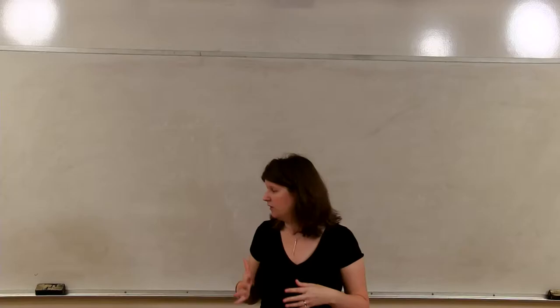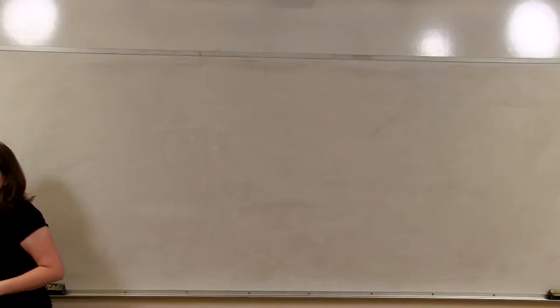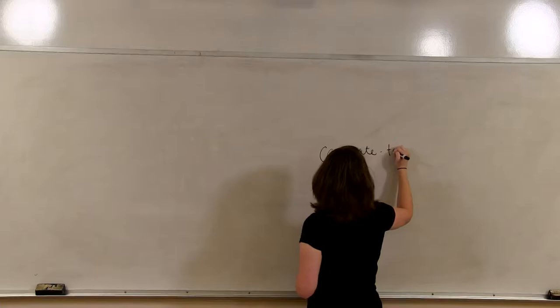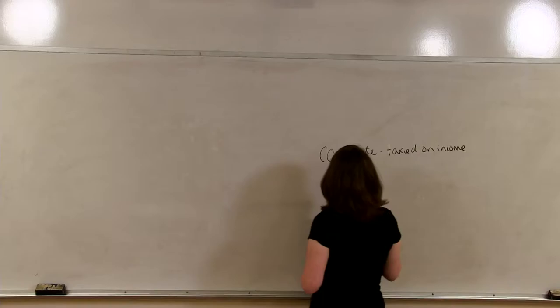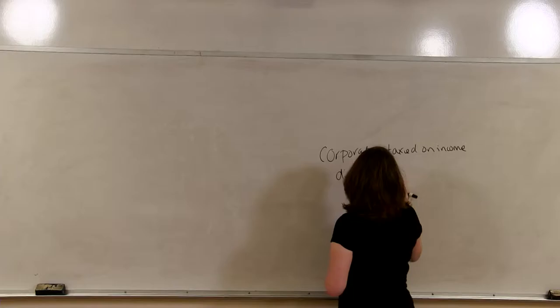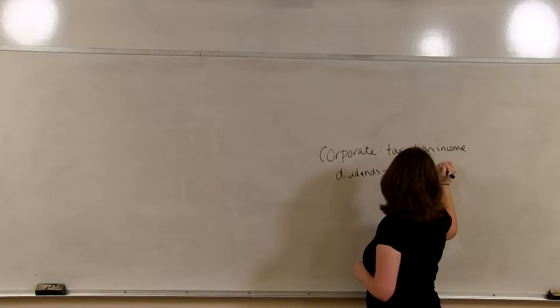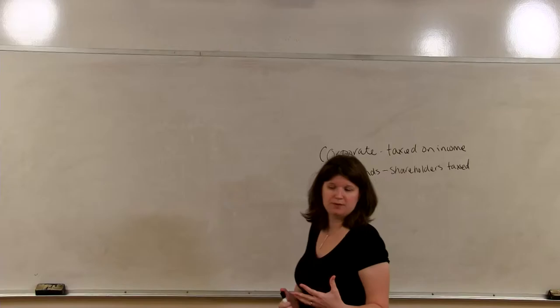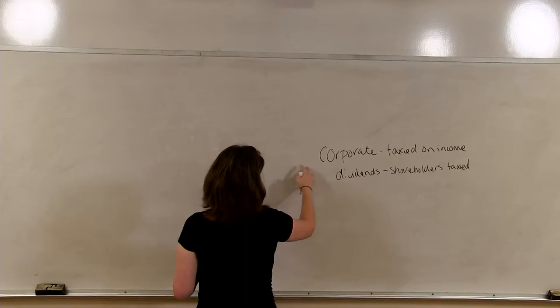So, let's go ahead and get started with the substance. A corporation is a separate taxable entity. You have probably heard it said that corporations have two levels of tax. Well, why is that? Well, because at the corporate level, they're taxed on the income, and then when dividends are distributed, now the shareholders are potentially taxed.